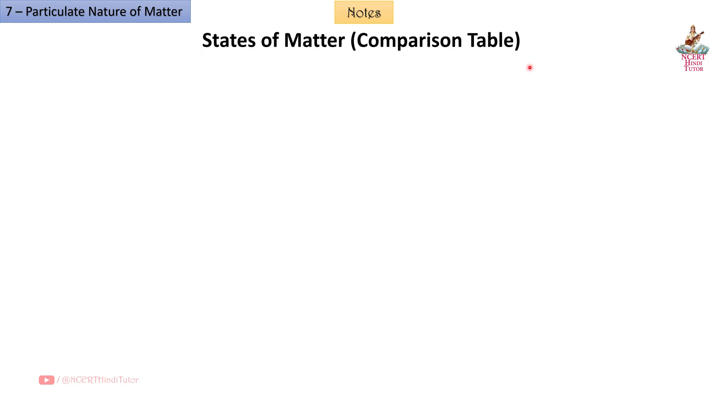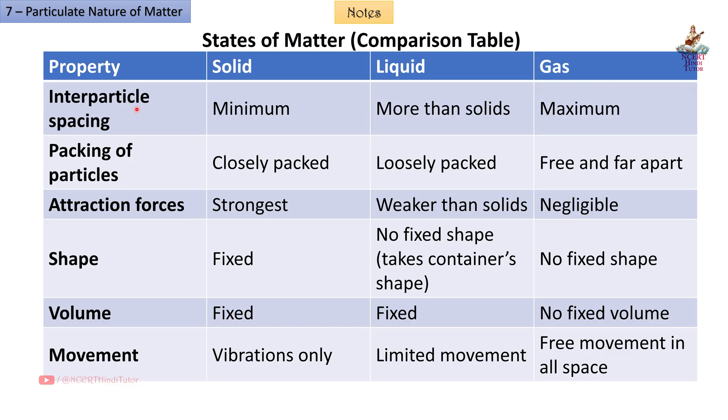States of matter Comparison table. Property: Inter-particle spacing - Solid minimum, Liquid more than solids, Gas maximum. Packing of particles - Solid closely packed, Liquid loosely packed, Gas freely and far apart. Attraction forces - Solid strongest, Liquid weaker than solids, Gas negligible.